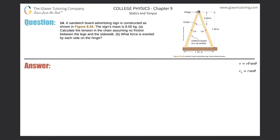Number 14. A sandwich board advertising sign is constructed as shown in figure 9.34. The sign's mass is 8 kilograms. Letter A: calculate the tension in the chain, assuming no friction between the legs and the sidewalk.